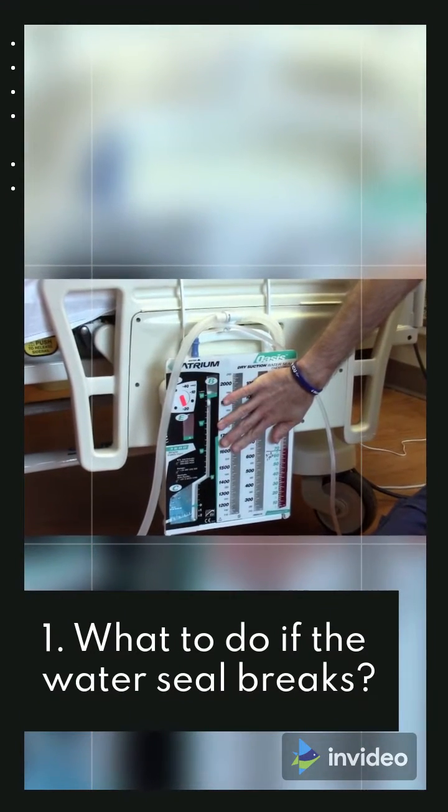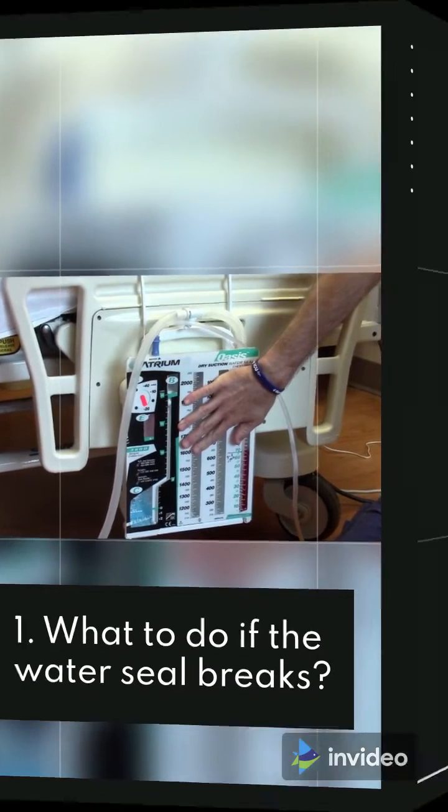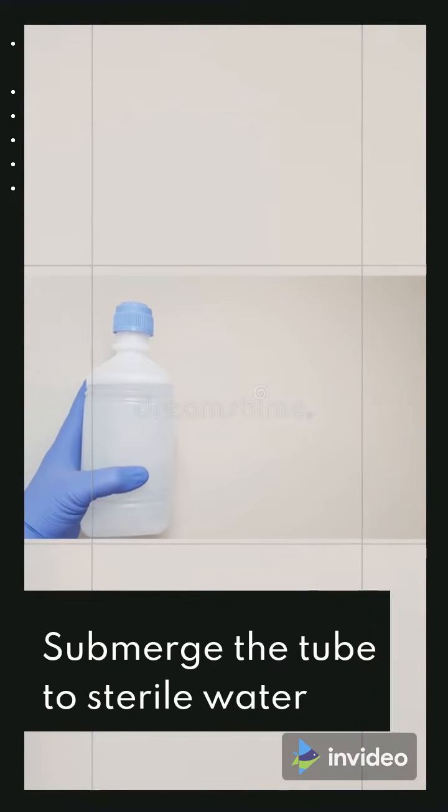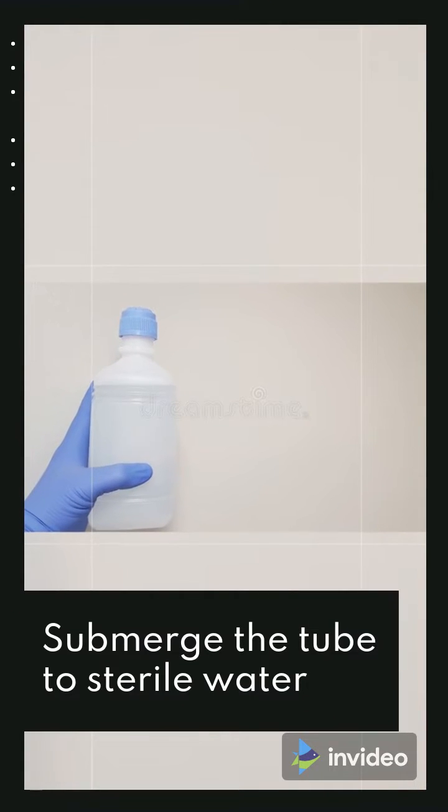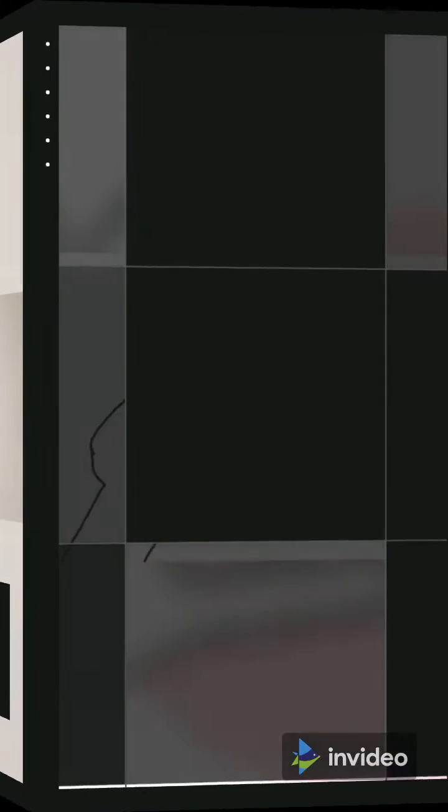What to do if the water seal breaks? Immediately submerge the tube in sterile water. If it is not available, clamp the tube for no longer than 15 seconds.